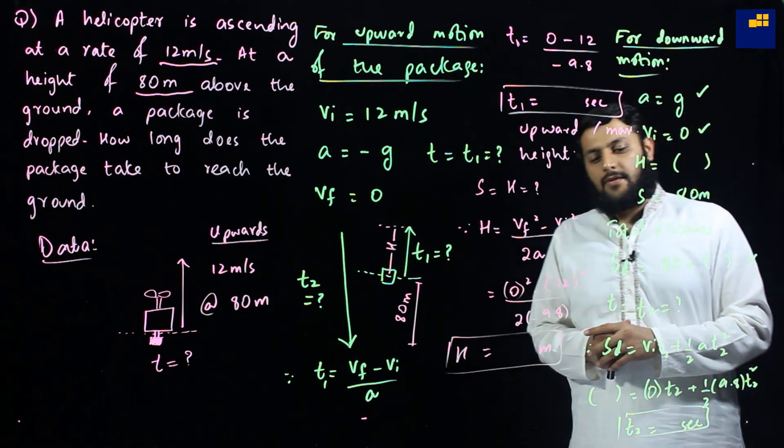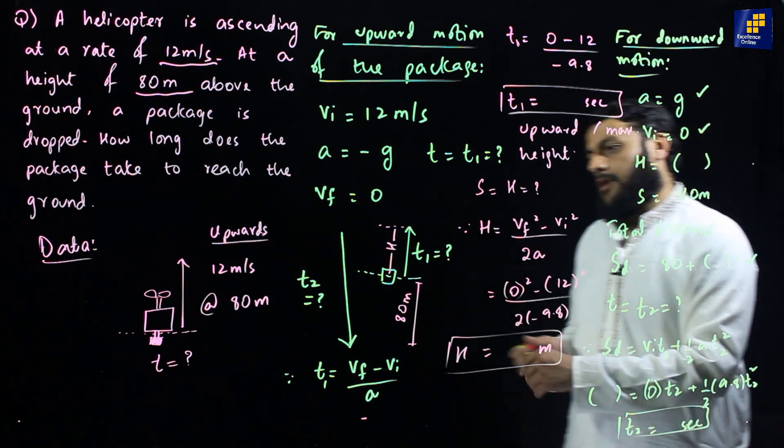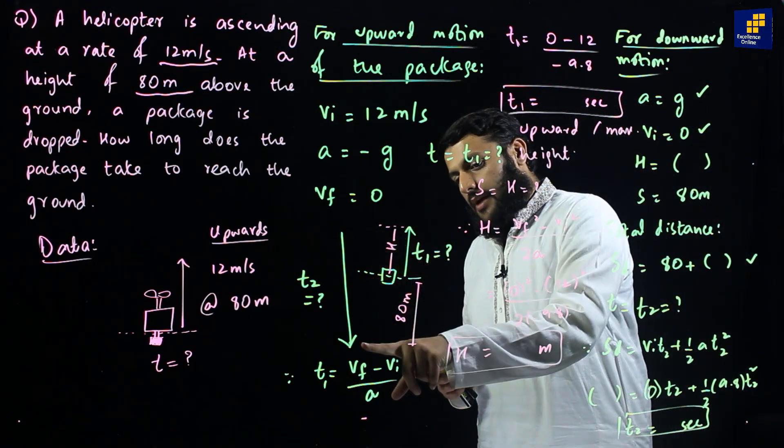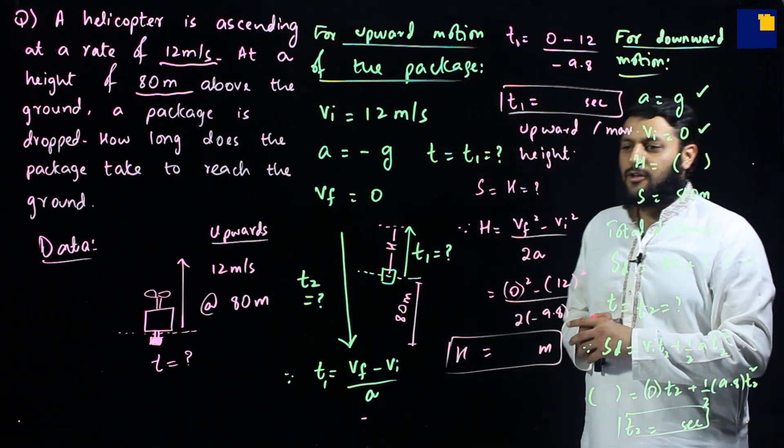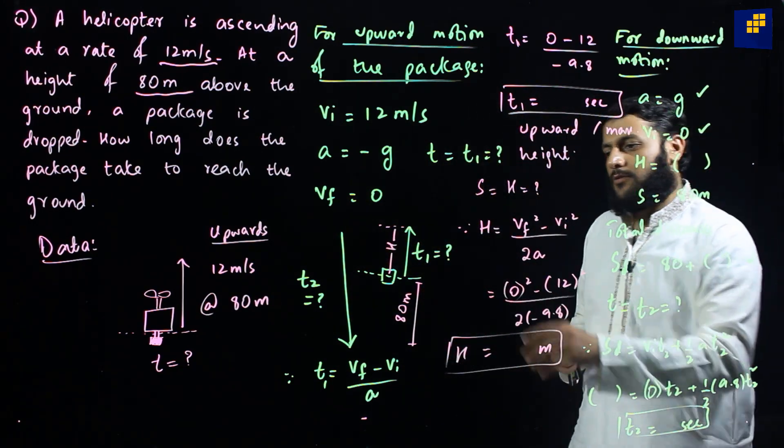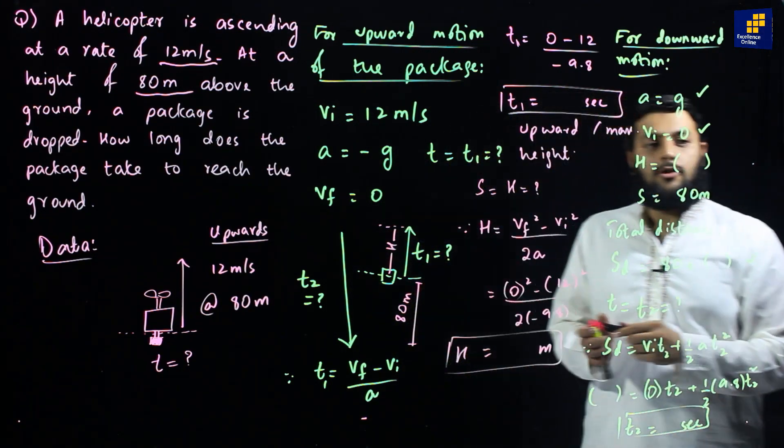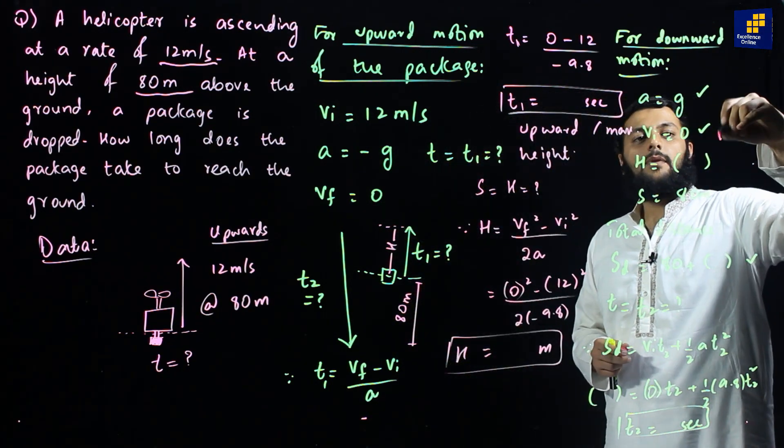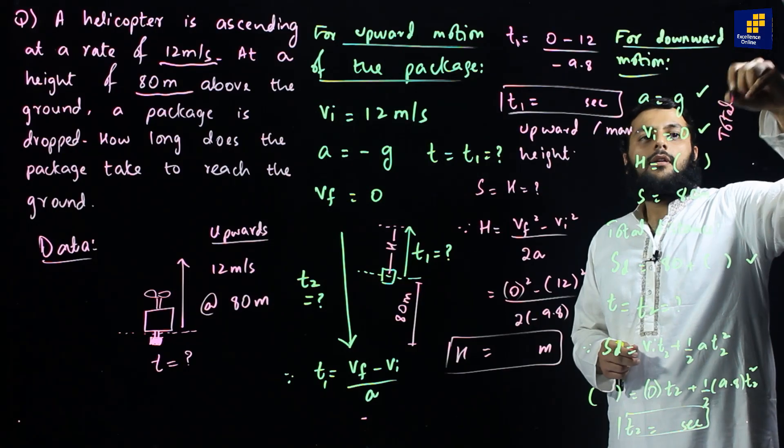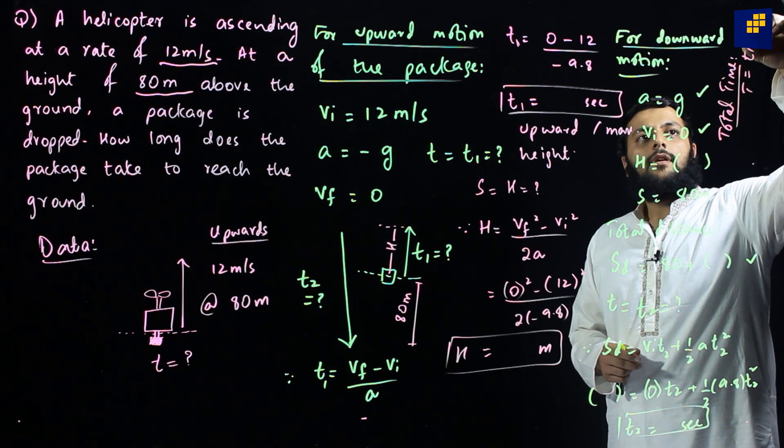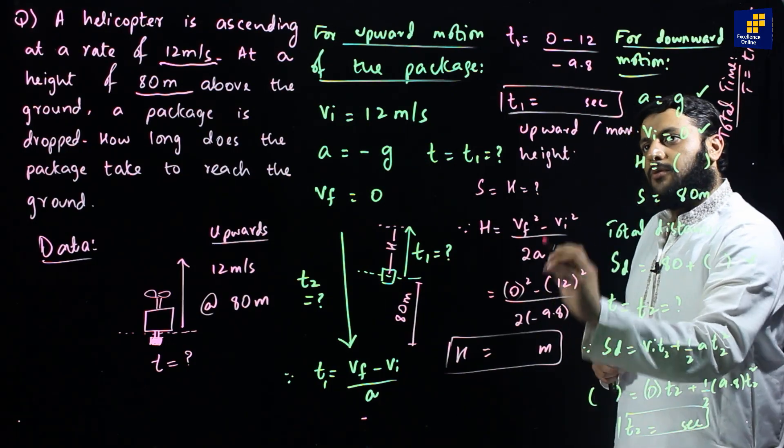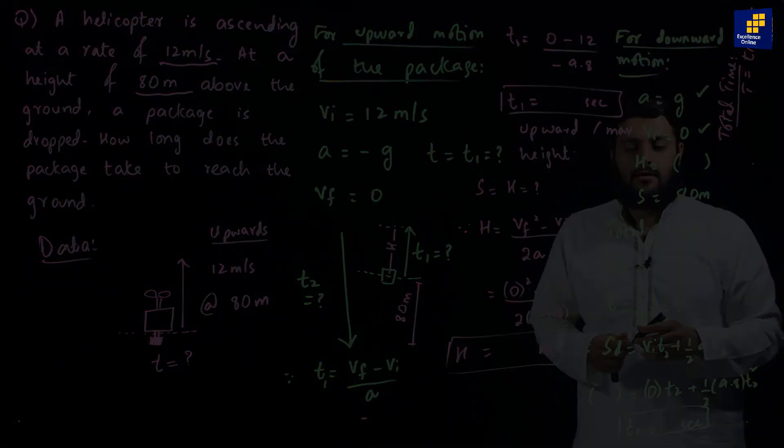Now, the only thing left is you know t2, that was the time for that package to come down. T1 time to go up. Question says how long does the package take to reach the ground? That means you need to work out the complete time. So what we are going to do is basically we are going to find the total time. Total time can be t equals t1 plus t2. So you know t2, you know t1, you get your final answer.